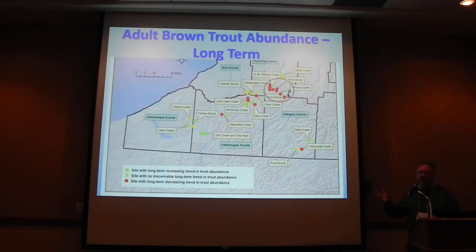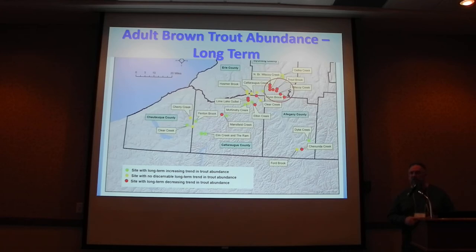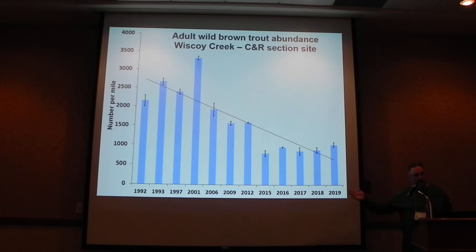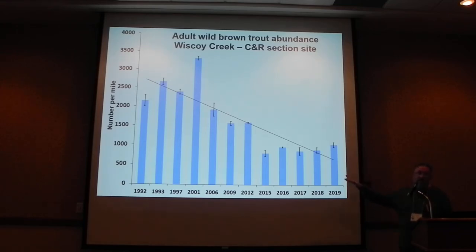Wiscoy Creek watershed is our best-known wild trout stream in western New York. Long-term, all our sites there show decreasing abundance of adult brown trout. Here's an example from one site on Wiscoy Creek — numbers were quite high back in the early 90s and 2000s. Short-term, over the last five sampling years things have kind of leveled out with maybe a slight increase. So we've seen big decreases, but hopefully the decrease may have stopped and may be starting to reverse.